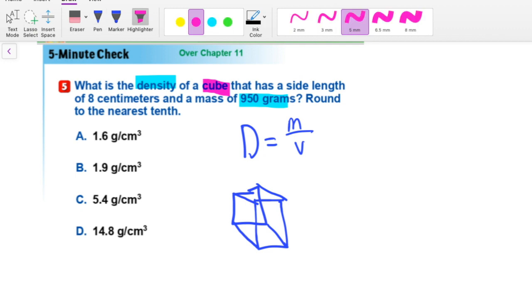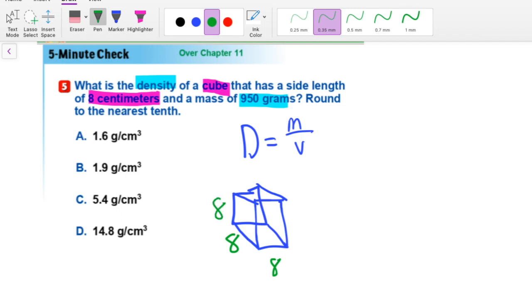What is the side length? It says right here, 8 centimeters. So let's change the colors up. Let's go with green. We know that this side is 8, and so this would be 8 and 8 as well. We have the height, the length, and the width. All of them are 8.